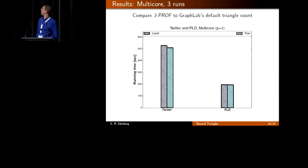We can also compare our running time. Our goal in this experiment is to compare the running time of our local three-profile algorithm to GraphLab's default triangle counting algorithm. This is a standard benchmark used in graph engines. We want to see how much extra time it requires to compute these extra numbers at every vertex. For two graphs here, the Twitter and PLD graph, the running times are very comparable. It doesn't require that much extra resources to run our three-prof algorithm versus counting triangles.